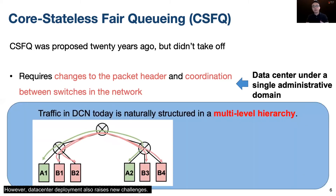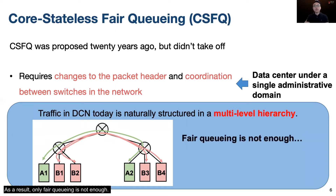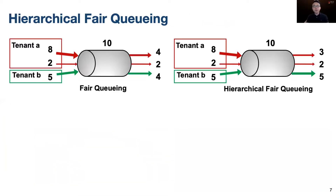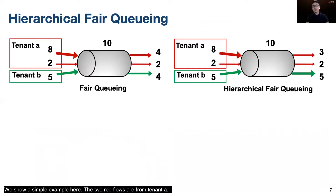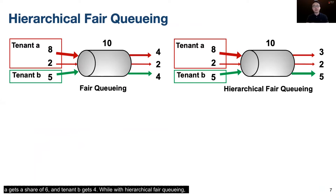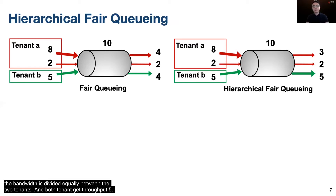However, data center deployment also raises new challenges, as the traffic in a data center network today is naturally structured in a multi-level hierarchy. As a result, only fair queuing is not enough, and hierarchical fair queuing might be more desirable. We show a simple example here. The two red flows are from tenant A, and the green flow is from tenant B. With fair queuing, tenant A gets a share of 6 and tenant B gets 4. While with hierarchical fair queuing, the bandwidth is divided equally between the two tenants, and both tenants get throughput 5.